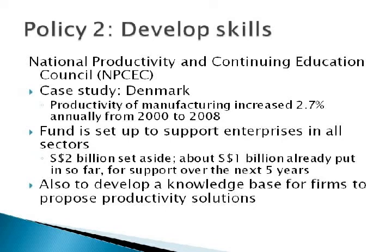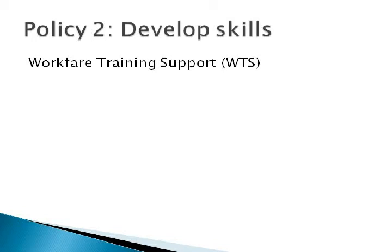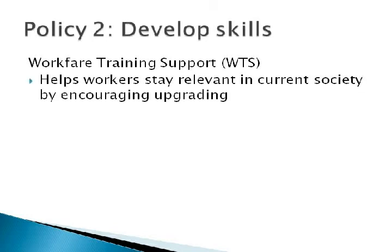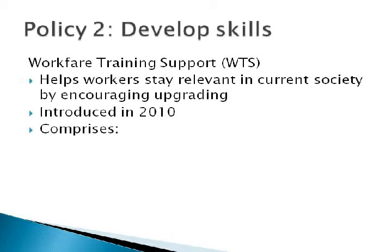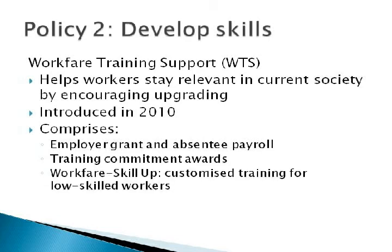To sum it up, the government is giving money to companies so that they can improve the economy. Another initiative is the Workfare Training Support Scheme, or WTS. It aims to help workers with a lower skill set to stay relevant to the needs of current society. Set up in 2010, it comprises three sub-policies. The first is to give employer grants and absentee payrolls as compensation to the firms. The second is to give awards to workers who have completed their training in its entirety. The last will be to provide low-skilled workers, especially those with secondary education and below, customized lessons to allow them to not miss out on upgrading opportunities.